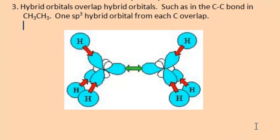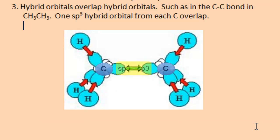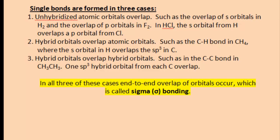This figure shows everything in ethane: the two hybridized carbon atoms with their sp3 orbitals overlapping. In addition, we see the s orbital overlap with the sp3 orbital between the hydrogen and the carbon. In all three of these cases, end-to-end overlap of orbitals occurs, and this is called sigma bonding.